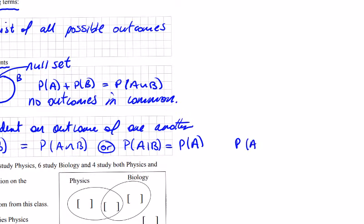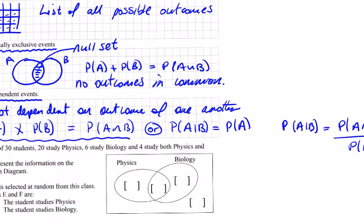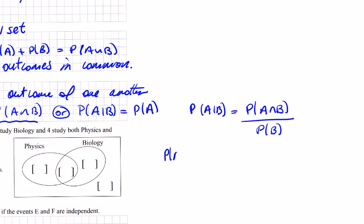Because the probability of A given B equals the probability of A intersection B over the probability of B. If we look at the independent events here, probability of A times probability of B equals probability of A intersection B. We can see that for these independent events to be true...